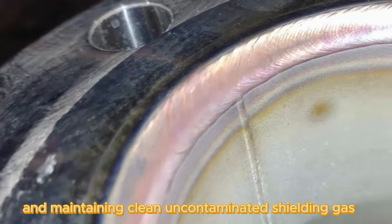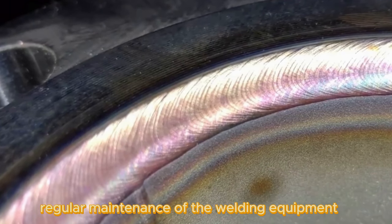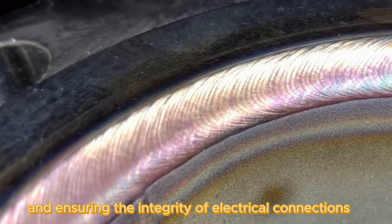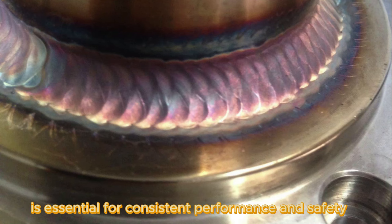It also includes maintaining clean, uncontaminated shielding gas. Regular maintenance of the welding equipment, including checking for leaks in gas lines and ensuring the integrity of electrical connections, is essential for consistent performance and safety.